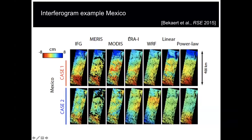ERA-Interim and HRES are weather models — ERA-Interim is medium resolution at about 70 kilometers, and HRES is a higher-resolution weather model. To give a feel, models remain models: sometimes you capture the long wavelength pretty well, while short wavelength might be a hit or miss. In other cases they don't do a very good job estimating a correction. Weather models are always available but may have their limitations.